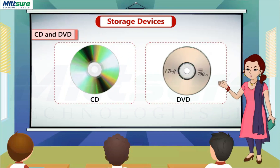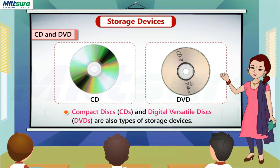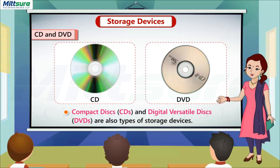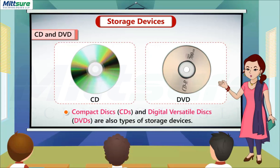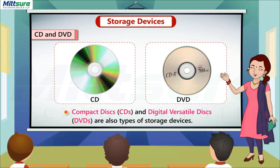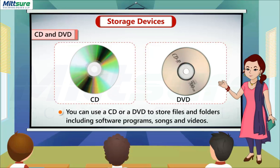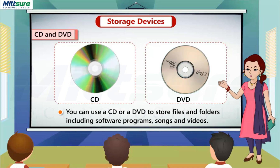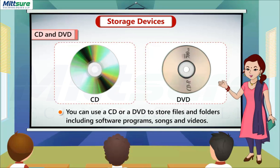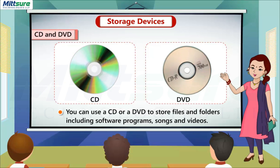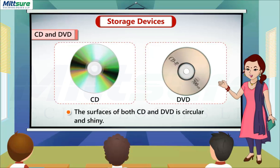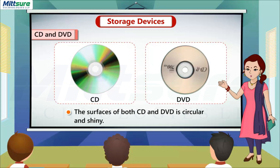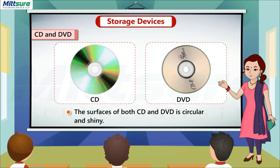CD and DVD: compact discs, or CDs, and digital versatile discs, or DVDs, are also types of storage devices. You can use a CD or a DVD to store files and folders including software programs, songs, and videos. The surface of both CD and DVD is circular and shiny.